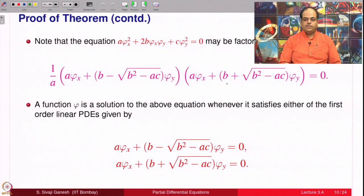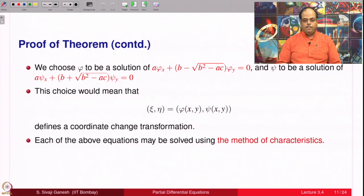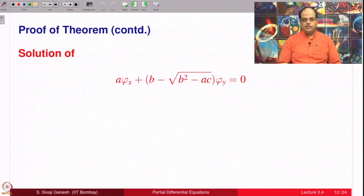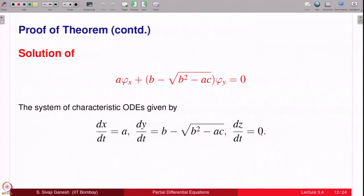We choose φ to be a solution of the first factor equation and ψ to be a solution of the second factor equation. Each of these equations can be solved using the method of characteristics — they are first order linear PDEs since A, B, C are known functions of x and y only, and the unknowns are φ_x and φ_y. The characteristic ODEs are written down; the third equation dz/dt = 0 means any solution is constant along the base characteristics.